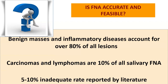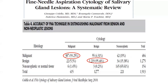We have to remember that there are differences according to the different salivary glands. For the parotid gland, the majority of lesions are benign — 80% versus 20%. For the submandibular gland, it's approximately 50% benign and 50% malignant. For the sublingual or minor salivary gland, more than 80% are malignant lesions. So we need to keep this in mind.